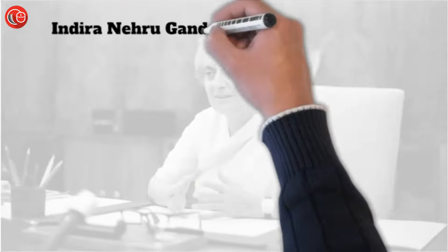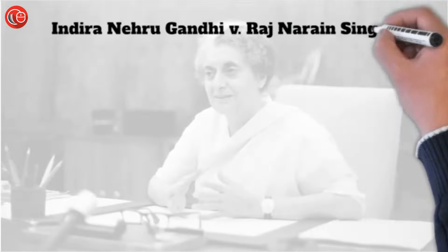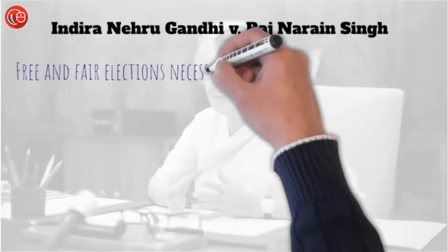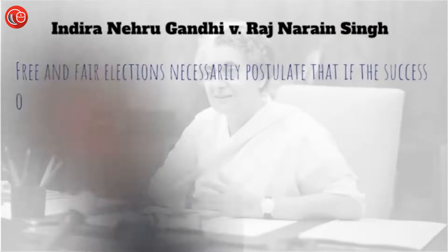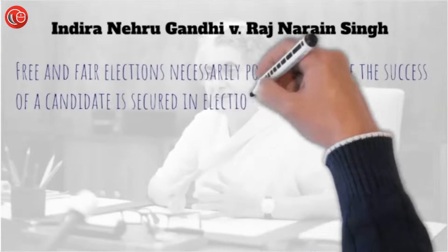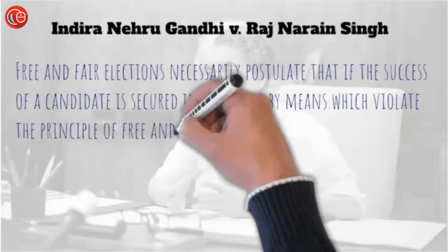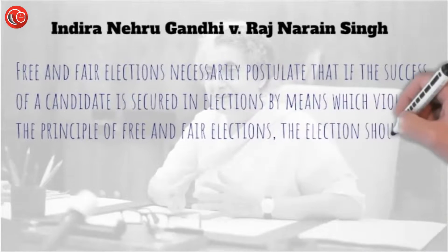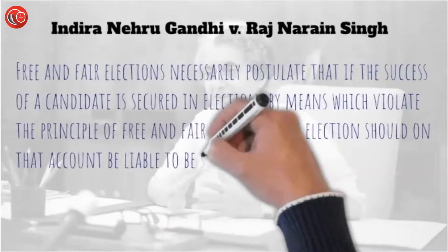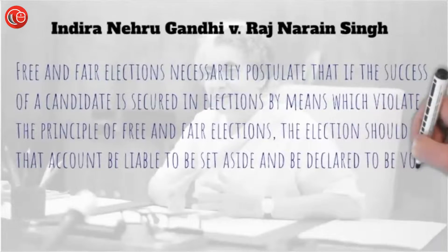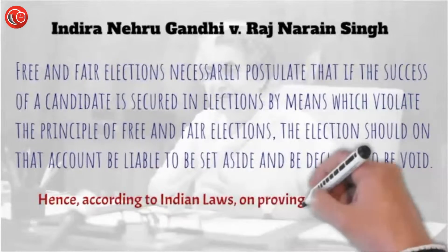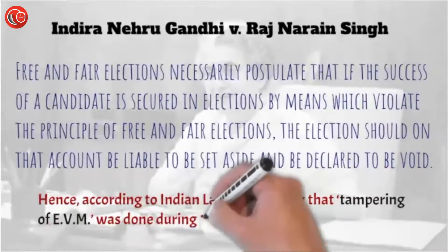In the case of Indra Nehru Gandhi vs. Rajan Alain Singh, it was held that fair and free elections necessarily postulate that if the success of a candidate is secured in elections by means which violate the principle of free and fair elections, the elections should on that account be liable to be set aside and be declared void. Hence, according to Indian laws, on proving that tampering of EVM was done during the poll, the elections would be considered void. That's all about it. Thank you.